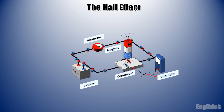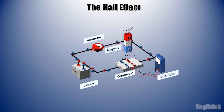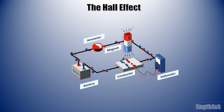The Hall voltage builds up until the electric force on the conductor balances the magnetic force, making the net force on the charge carriers zero. Edwin Hall also found that the magnitude of the voltage was proportional to the strength of the magnetic field and the current flowing through the conductor.